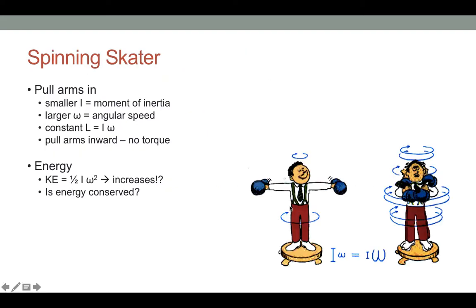This leads to the classic example of a person standing on a rotating platform — like a skater spinning around. Pull your arms in and you start spinning faster. This is conservation of angular momentum. There are no torques acting, but you are reducing your moment of inertia. To keep angular momentum the same, if the moment of inertia gets smaller, the angular velocity must get bigger, so you spin faster.